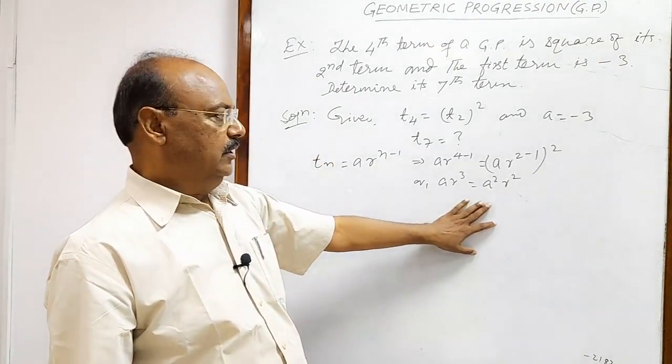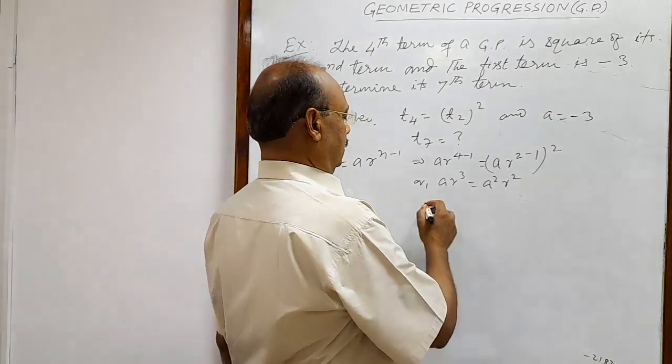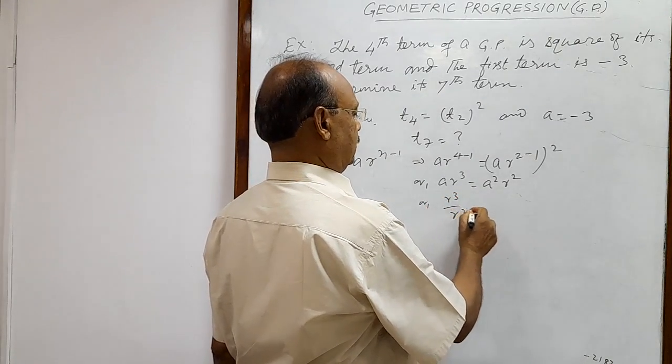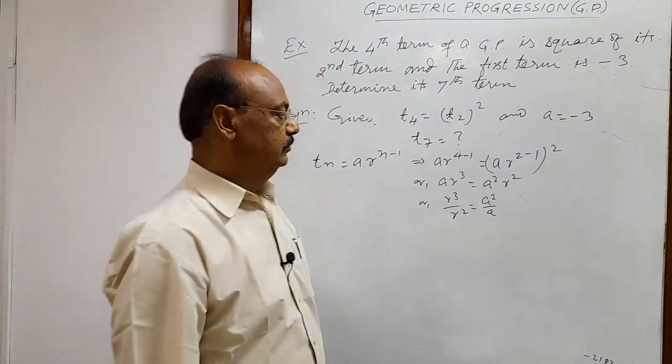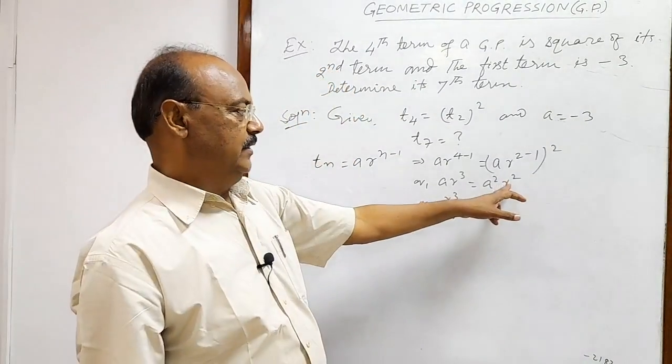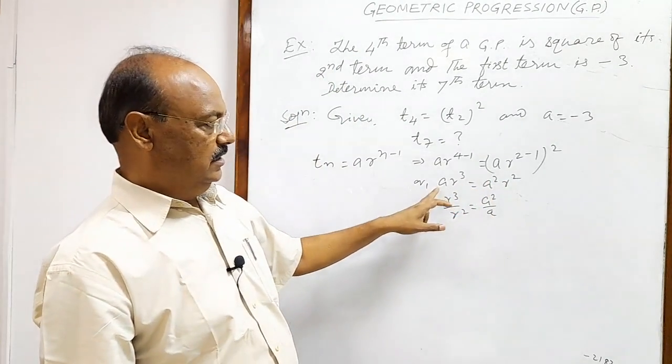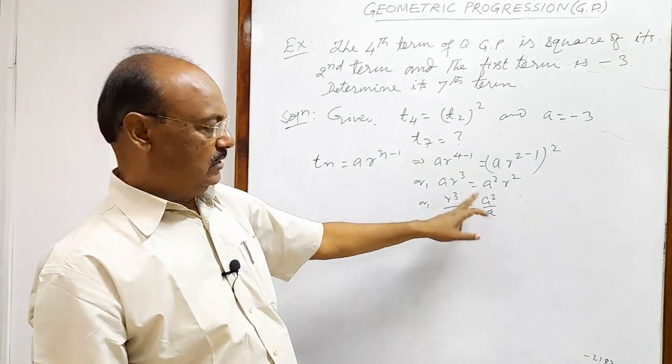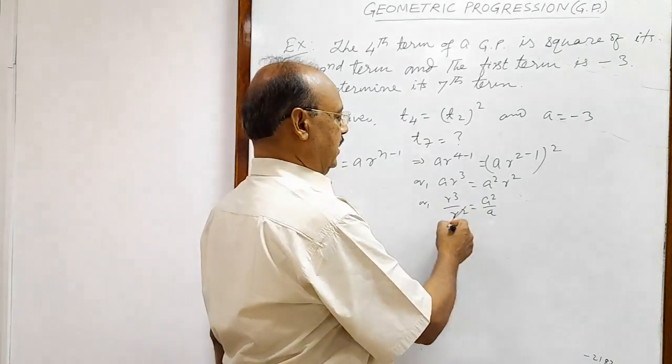Very simple. We can also write R cube by R square is equal to A square by A. This R square has been transposed to left hand side, so it comes in denominator. And this A is transposed to right hand side, so it also comes in denominator.